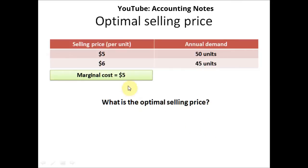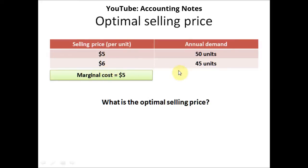So we have this company that originally sells the product at $5 per unit, for which the annual demand is 50 units. The company has forecasted that if they increase the selling price to $6 per unit, the annual demand will be 45 units only, which is a drop of 5 units from 50 to 45 units. The marginal cost is $5.